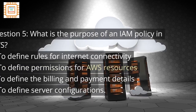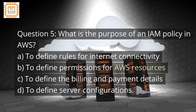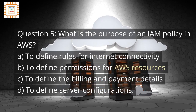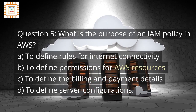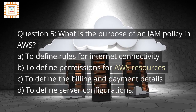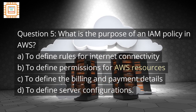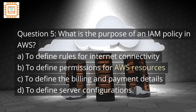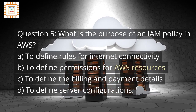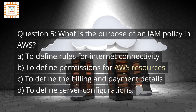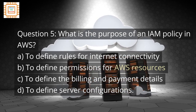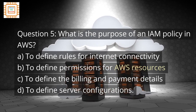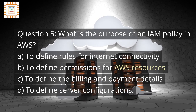Question 5: What is the purpose of an IAM Policy in AWS? A. To Define Rules for Internet Connectivity. B. To Define Permissions for AWS Resources. C. To Define the Billing and Payment Details. D. To Define Server Configurations.